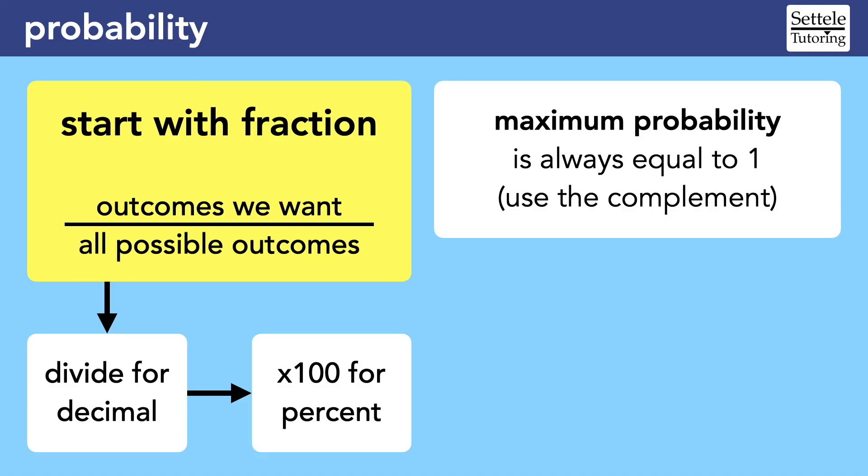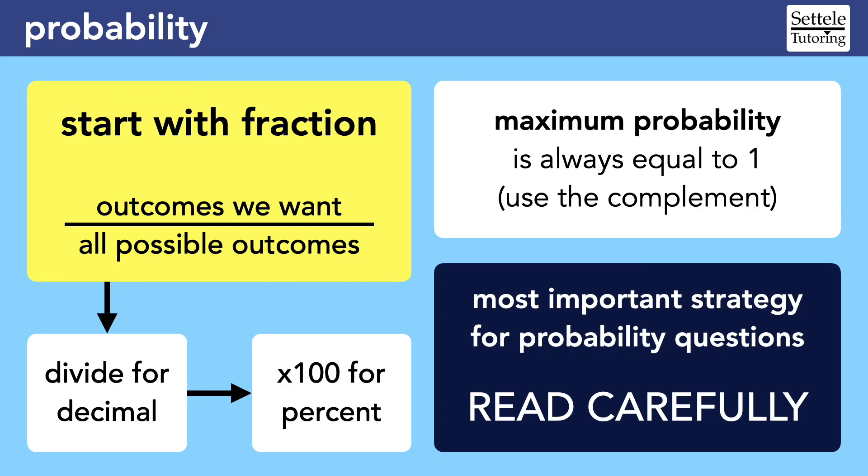And for the most difficult probability questions, the most important strategy will always be to read carefully. Two questions might sound very similar but produce very different answers. And you can bet that if the question is multiple choice, the answer you would get if you misread the question will be there as a trap. I highly recommend re-reading probability questions multiple times because just one word can completely change your answer.